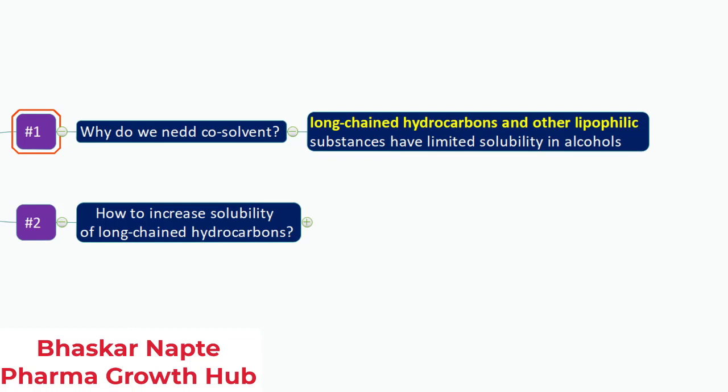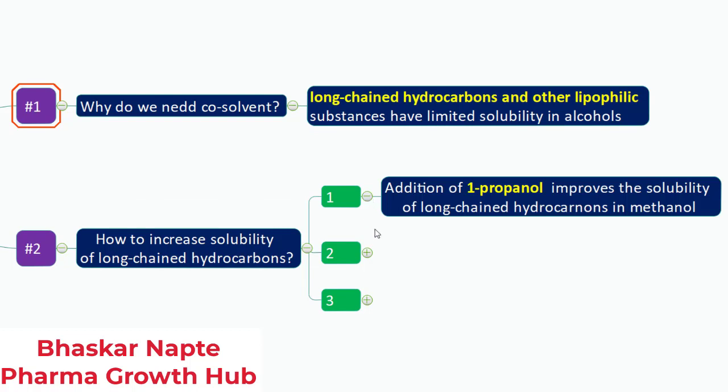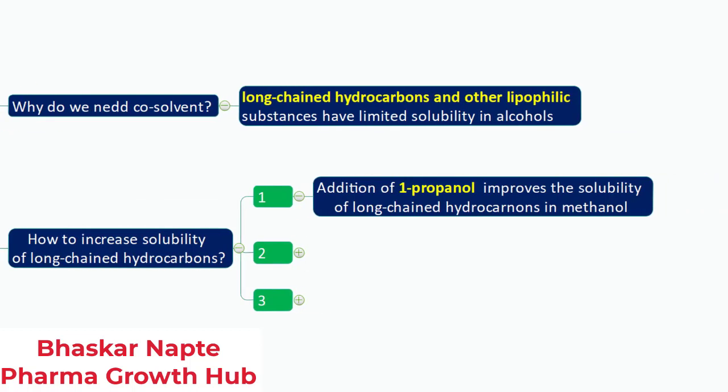So how do you increase the solubility of long-chain hydrocarbons? The solubility of long-chain hydrocarbons can be increased in the presence of 1-propanol. I am not saying to replace the methanol with propanol — you need to have methanol as part of your reaction vessel. In addition to that, you add a certain amount of 1-propanol, and this will further help in increasing the solubility of long-chain hydrocarbons or lipophilic compounds.